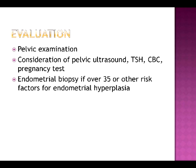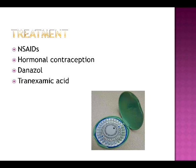Uterine fibroids are diagnosed by pelvic examination and/or pelvic ultrasound. Initial treatment of menorrhagia usually includes NSAIDs, which may decrease the amount of menstrual blood loss. Other treatment modalities include combination hormonal contraception, either oral contraceptive pills, contraceptive ring, or patch. Iron supplementation is indicated in most women as well.